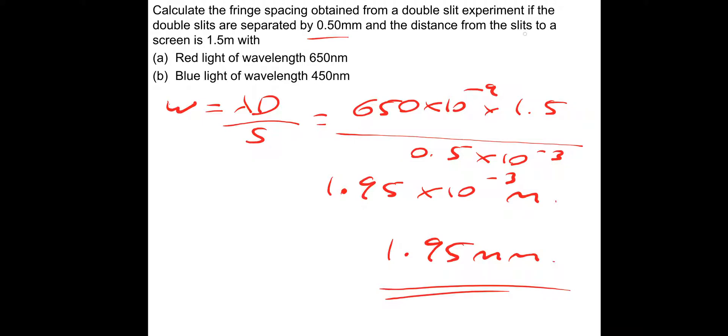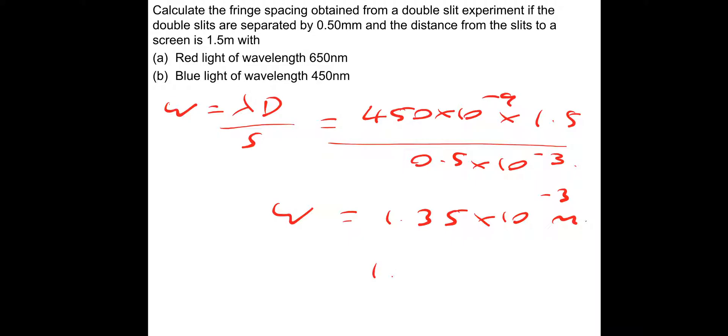Now let's do the blue light. Blue light: once again, W equals λD/S. The wavelength is 450 nm, so 450 times 10^-9, multiplied by the distance D, 1.5 meters, and then divide by S, which is 0.5 times 10^-3. Put in our calculators, we get a fringe spacing of 1.35 × 10^-3 meters or 1.35 millimeters.